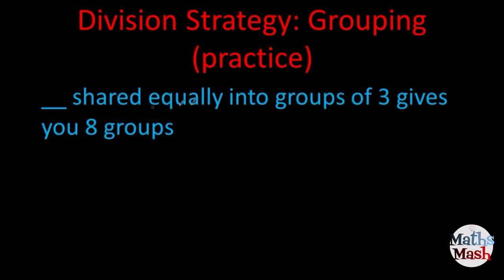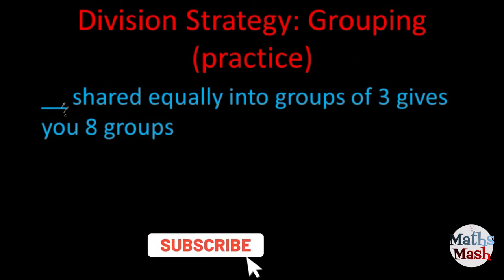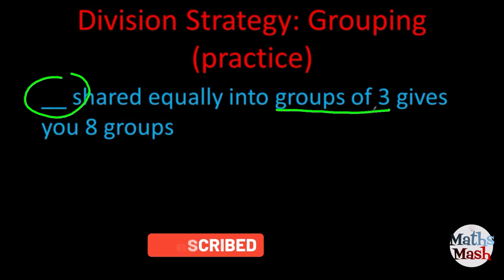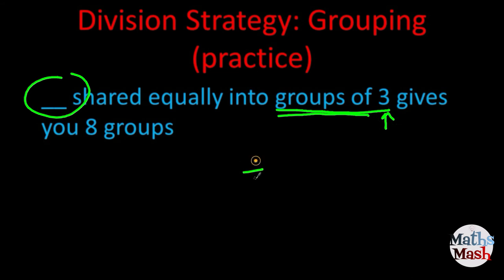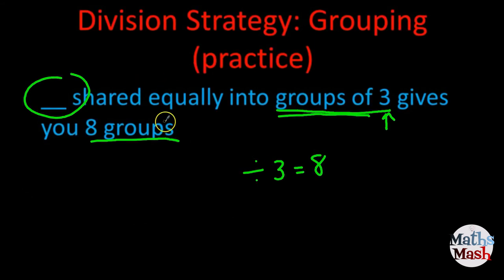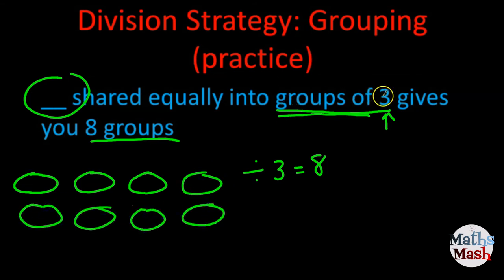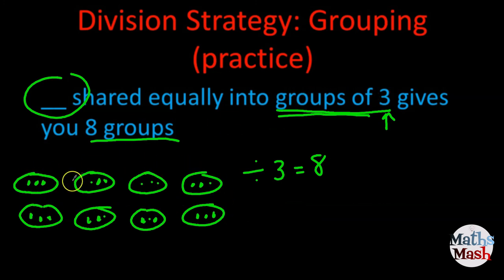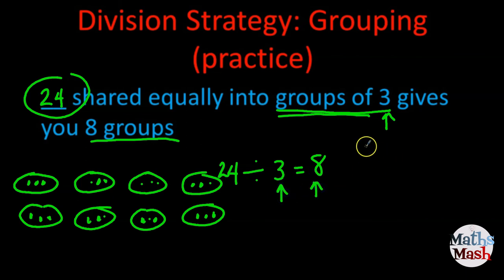Something shared equally into groups of three gives you eight groups. We don't know how many are shared equally, but groups of three means three is our divisor. I write that in, and I can see I've got eight groups, so I write my eight. Now I draw eight groups and put three in each group. I make sure I've got eight groups with three in each — yes. Counting up in threes, I can see 24. So 24 divided by three is eight. Just to check: three times eight gives me 24. Correct.